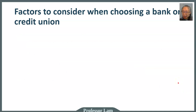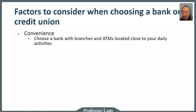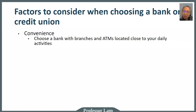Here are some factors that you want to consider when you are choosing a bank or a credit union. One is convenience. Particularly if you use cash, you want to choose a bank that has an ATM close to your daily activities so you don't end up paying unnecessary fees. There are also advantages to having a bank that has a branch in person, so you can ask questions in person just in case something does happen.